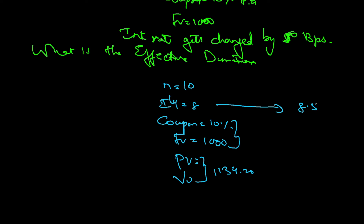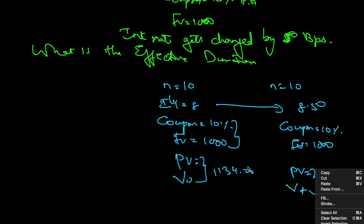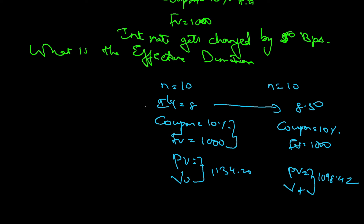If the interest rate goes up by 50 basis points, IY becomes 8.50%, with the rest remaining the same — coupon 10%, future value 1000. Computing the present value in this case gives V-plus, which is 1098.42.